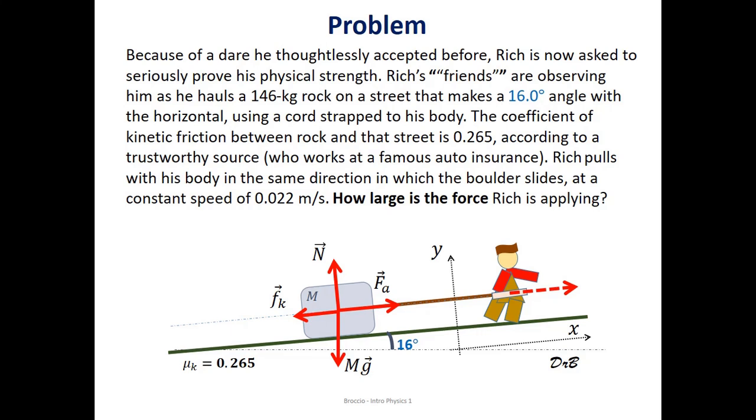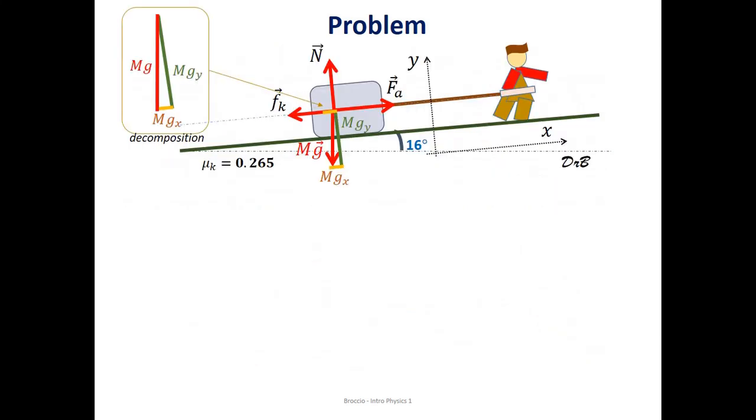The other three vectors, f_a, f_k, and n are already aligned with the coordinates, so we only have to decompose mg. We are going to decompose it in the x and y directions. There is a mg sub y and mg sub x based on this figure.